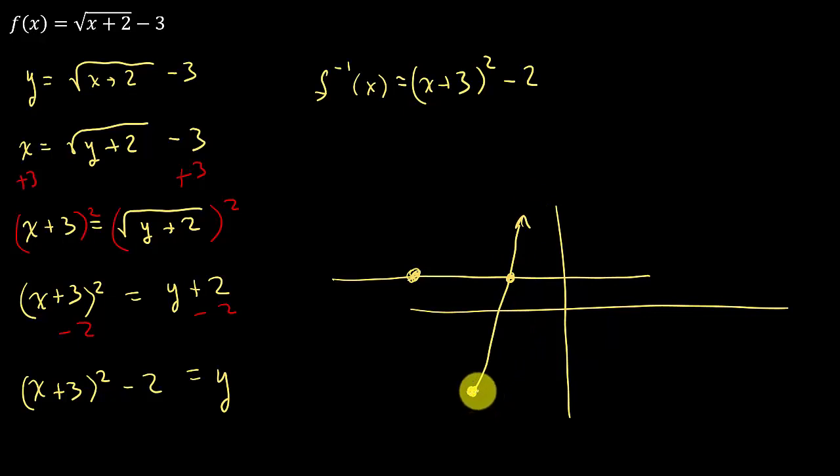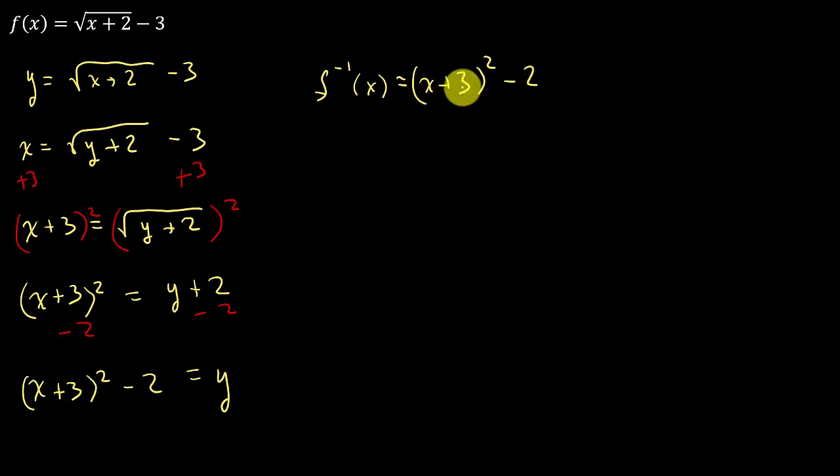So what have I done? Well, I said I'm only going to use x values from this point back this way. I'm restricting the domain of the function. And that makes it one to one. All right, so I've got to put a restriction on the domain of this function here. Well, what does it need to be?